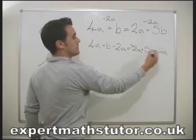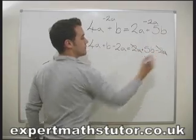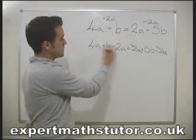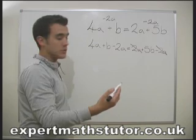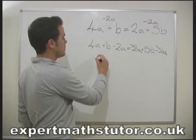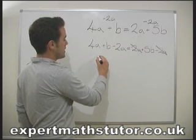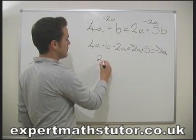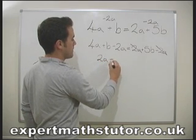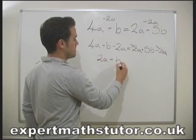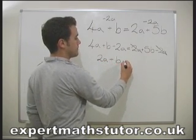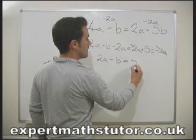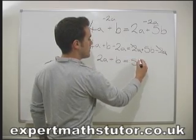On the right-hand side the 2a's cancel out. On the left-hand side we simplify, and we get 2a plus b equals 5b.